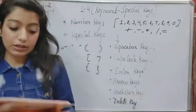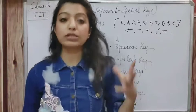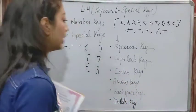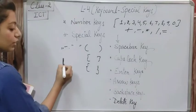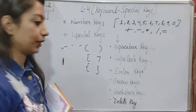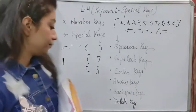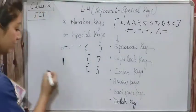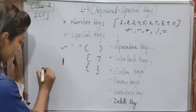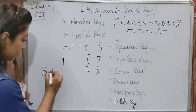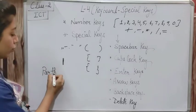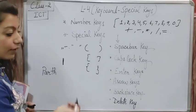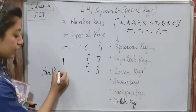Now I will tell you about the Enter key. The Enter key is used to bring the cursor to the next line. The cursor is the blinking arrow on screen. For example, if I have written 'path' and I want to write another name on the next line, I will press the Enter key and the cursor will move down.